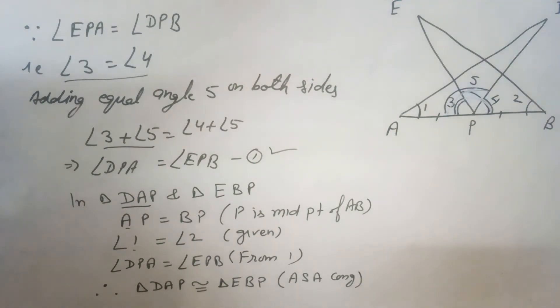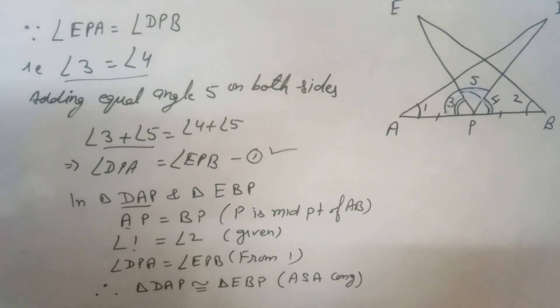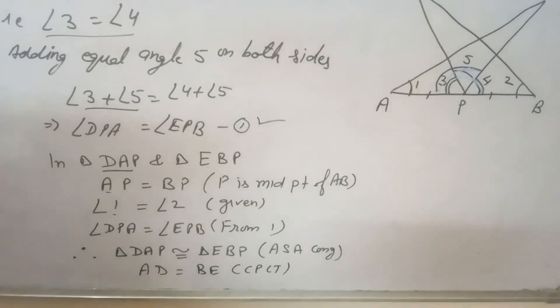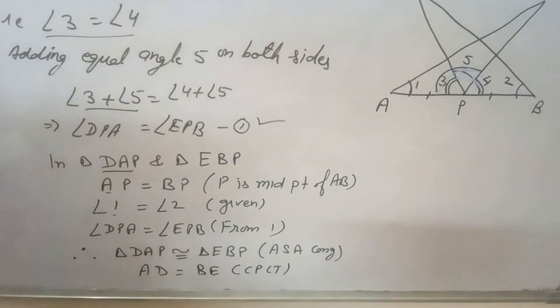From these three conditions, triangle DAP is congruent to triangle EBP. Because these two triangles are congruent, AD equals BE by CPCT.